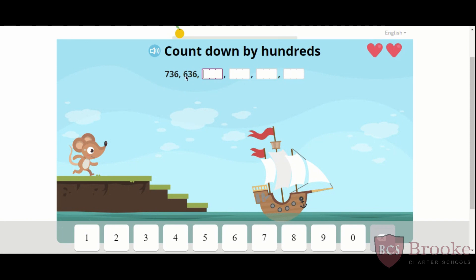Good, 536. Count with me. 736, 636, 536. Next is? Good, 436. You're figuring out that the tens and the ones just stay the same each time. 36, 36, 36, 36.